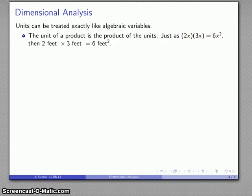If I treat the units just like algebraic variables, then here's a simple calculation: 2 feet times 3 feet. I multiply the coefficients to get 6, I multiply the units together to get feet squared, and my product is 6 feet squared.